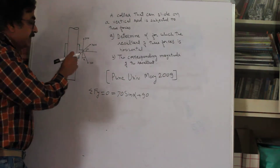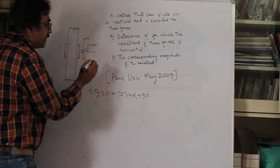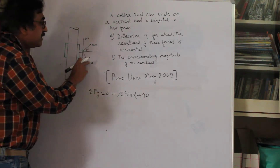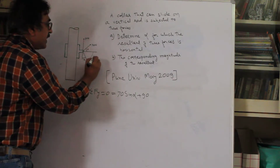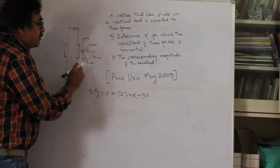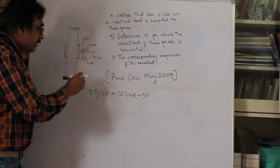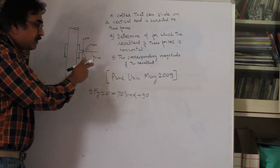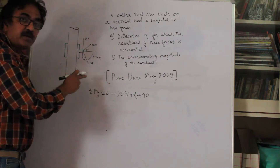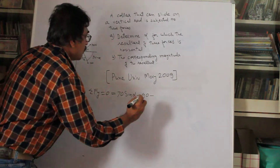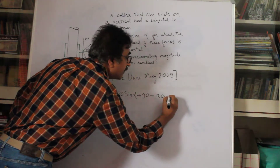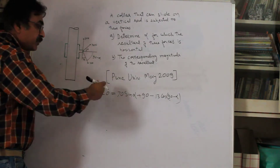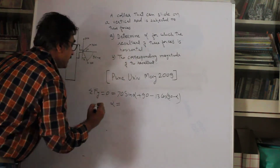The third force, 130N, when resolved in the vertical direction, acts downward. Our discipline is to measure the angle this force makes with the horizontal direction, which gives 90 minus alpha. So the vertical component is 130 sine of (90 minus alpha), acting downward, giving minus 130 sine(90 − alpha). Setting the full equation to zero: 70 sine alpha + 90 − 130 sine(90 − alpha) = 0.